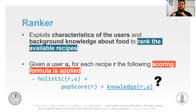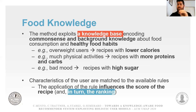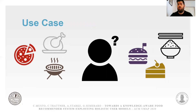In order to implement this knowledge-aware part, we implemented a knowledge base. The goal of this knowledge base is to encode as rules some common sense and background knowledge about food consumption and healthy food habits. For example, if a user is overweight, do not suggest recipes with high calories; or if a user has done much physical activity, suggest recipes with high proteins. We activate these rules based on the characteristics of the user, and once a particular rule is activated, we increase or decrease the score of the formula accordingly. At the end of this step, we generate a ranking and suggest the most suitable recipe for the user.